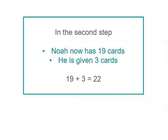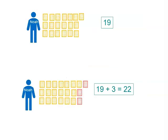When we go to our second step, we use that 19 because that's what Noah has now. He's then given three cards, so we're going to add three onto Noah's total. 19 plus three equals 22. So Noah had 19 cards at the start of the second step, then we added three more to make 22.